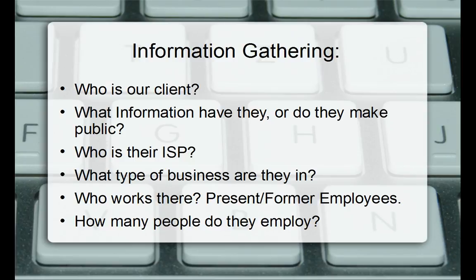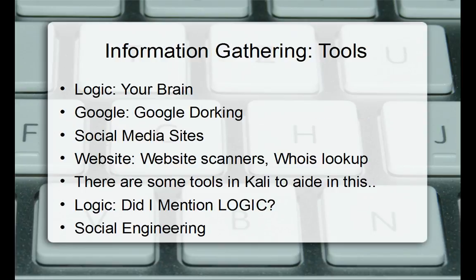These are all things you need in your information gathering process to better base your attack. Some of the tools you'll use — the best is logic, your brain. Computers only do what we tell them to do. Information gathering is such a critical component of network security auditing. You can also use Google dorking — specialized Google searches — though it's not as big as it used to be.